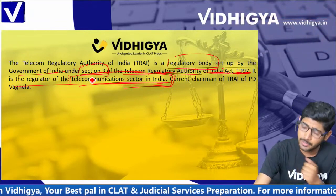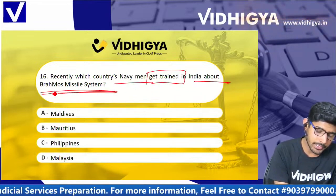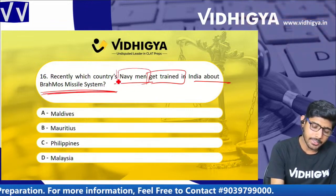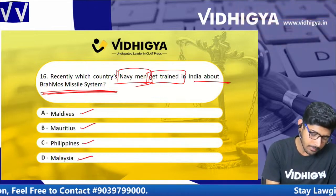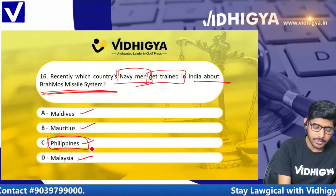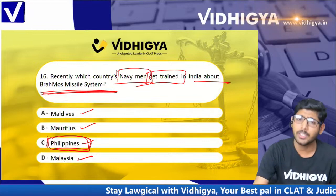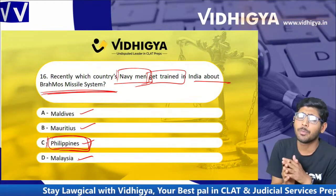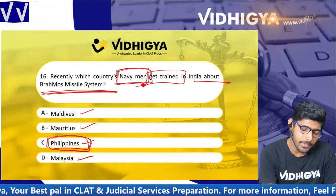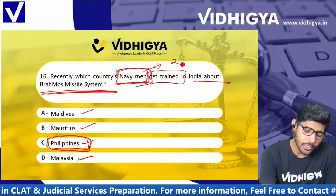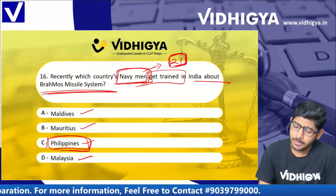Recently, which country's navy personnel were trained in India about the BrahMos missile system? Options are: Maldives, Mauritius, Philippines, and Malaysia. The correct answer is Philippines. Last year in January 2022, a $357 million deal was signed for the transfer of BrahMos missiles to Philippines. Recently, training was given to Navy personnel of Philippines, and 21 navy personnel are to be awarded by India's naval admiral.